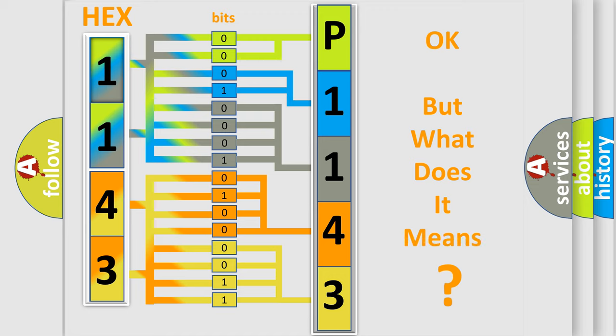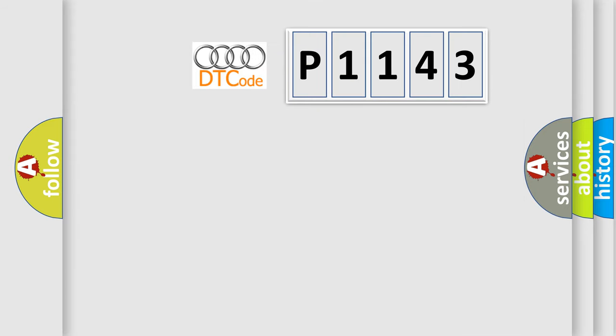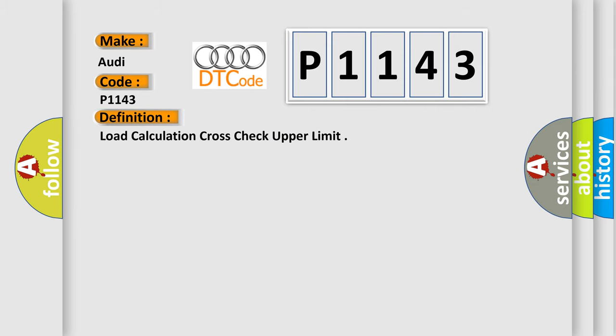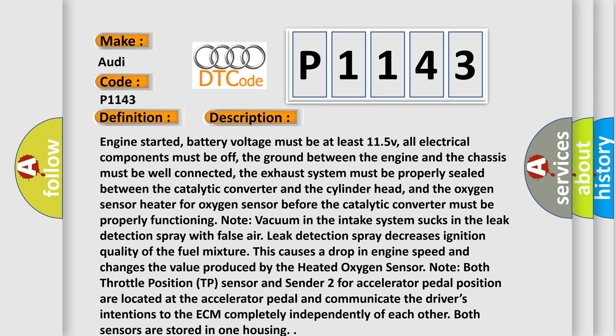We now know how the diagnostic tool translates the received information into a more comprehensible format. The number itself does not make sense to us if we cannot assign information about what it actually expresses. So, what does the diagnostic trouble code P1143 interpret specifically for Audi car manufacturers? The basic definition is: Load calculation cross check upper limit.